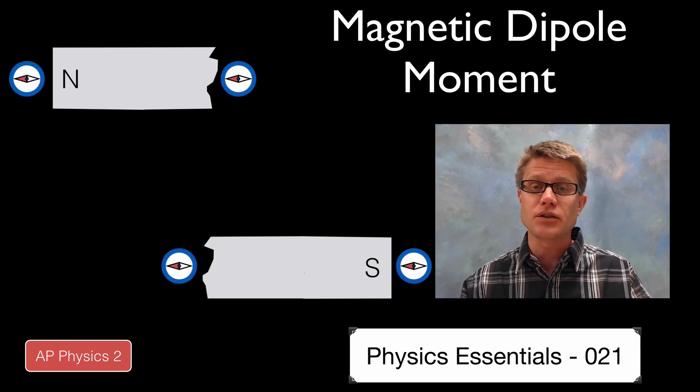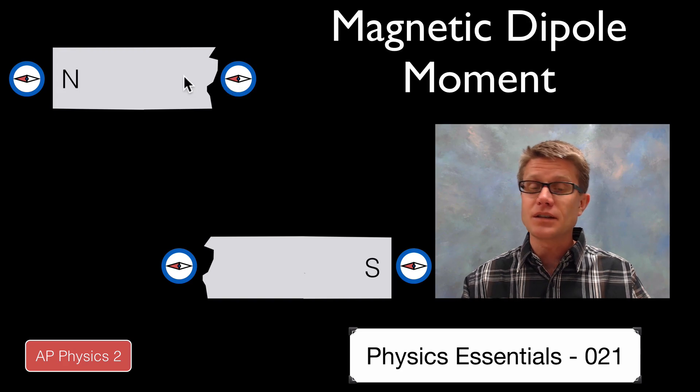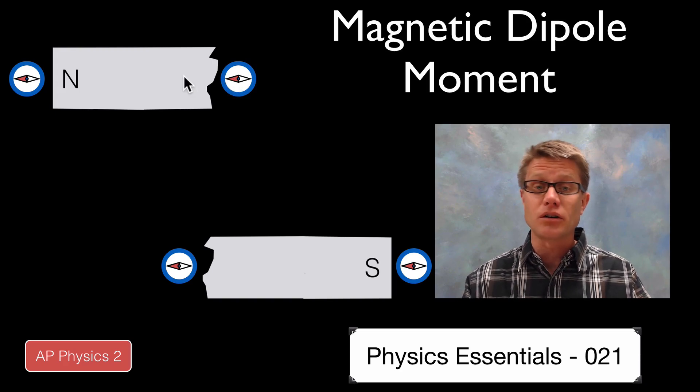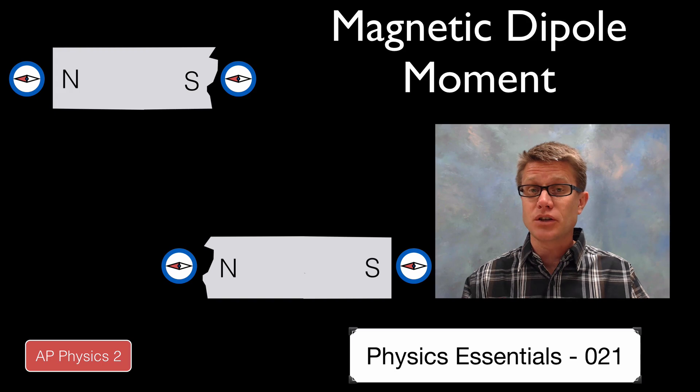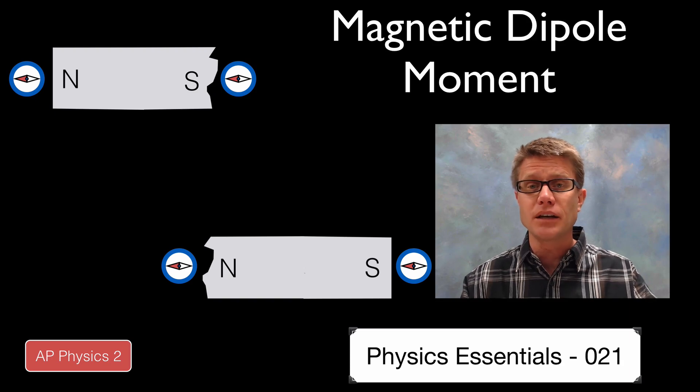We would use compasses again at either side and you can see that they line up. In this case the north side of this magnet is facing the south side of the smaller magnet. And so now we have essentially created two dipoles. And if you break it in half again we have two smaller magnets.